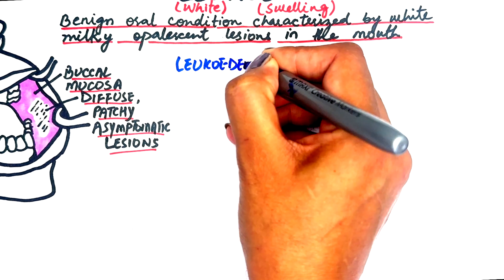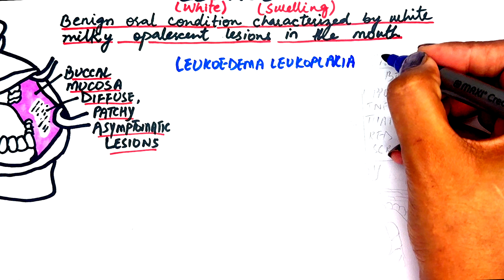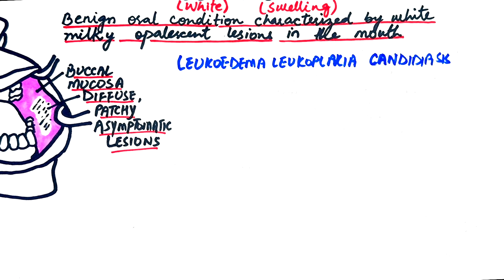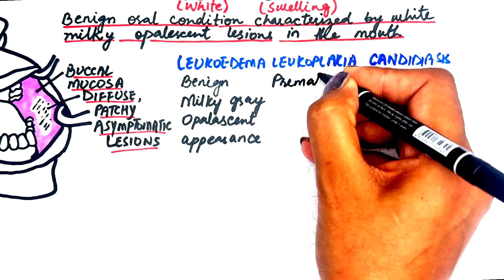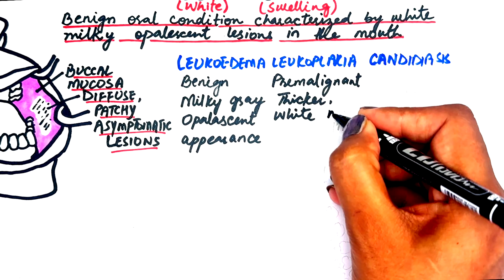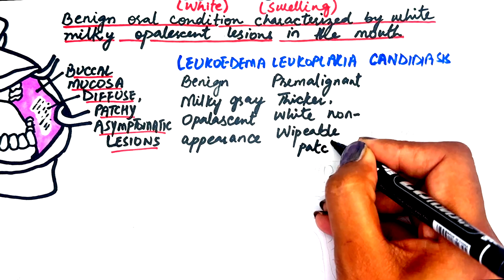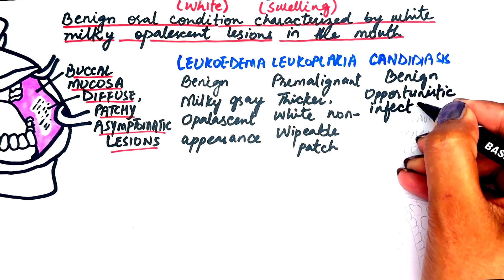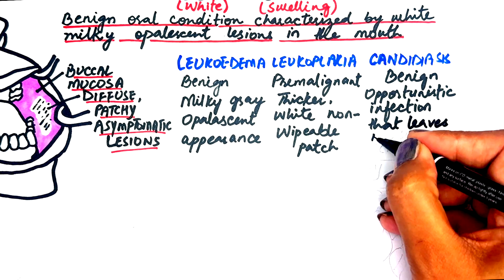Because of its appearance, leucoedema is sometimes mistaken for leukoplakia or oral candidiasis. However, all three are different. Leukoplakia is a premalignant or precancerous lesion with a thicker white, non-wipeable patch, and candidiasis is a benign opportunistic infection that leaves behind red lesions when scraped off.